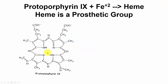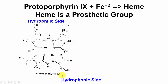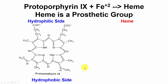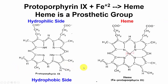Protoporphyrin 9 is the precursor for heme — we'll discuss its biosynthesis later. It has a hydrophilic side with carboxyl groups carrying a negative charge, and a hydrophobic side with no charges or hydroxyl groups. Heme is formed by adding iron (Fe2+) to protoporphyrin 9.